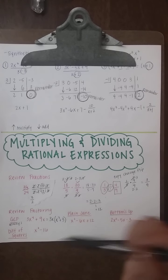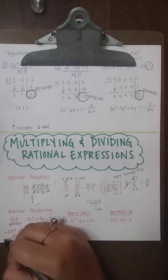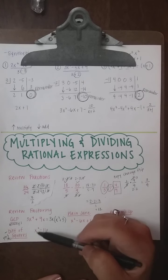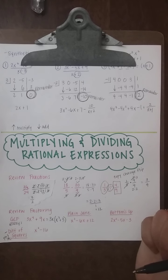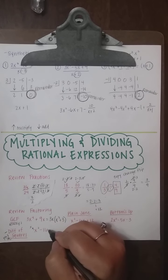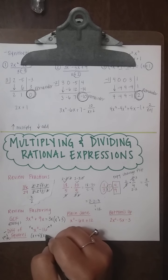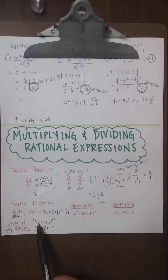The second pattern to look for is the difference of squares — subtraction between two perfect squares. For example, x² − 16: the square root of x² is x, and the square root of 16 is 4. The pattern always factors to (x + 4)(x − 4).